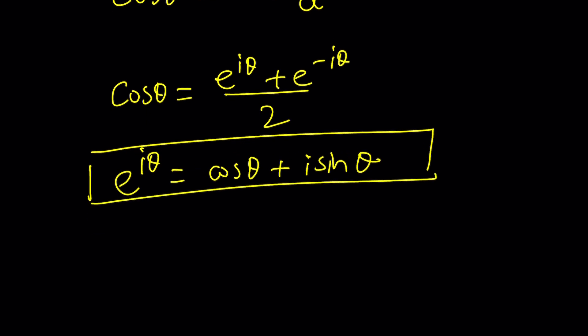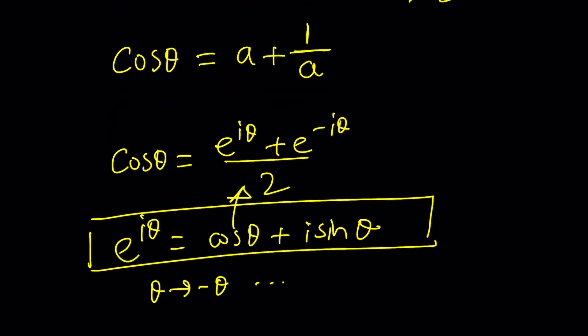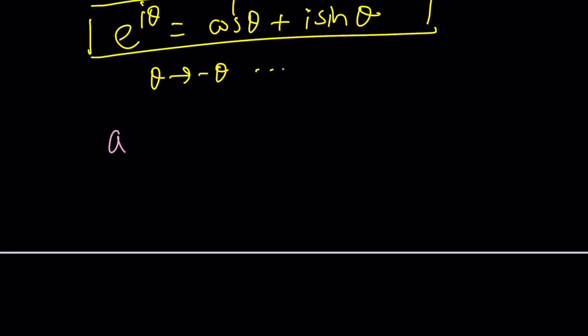Cosine theta can be written as e to the i theta plus e to the negative i theta divided by two. Without getting into the proof, I don't want to spend too much time on this, but you can check out the lecture videos. E to the i theta is equal to this, and from here you can get that by replacing theta with negative theta. We now have an equation, so we can set these equal to each other.